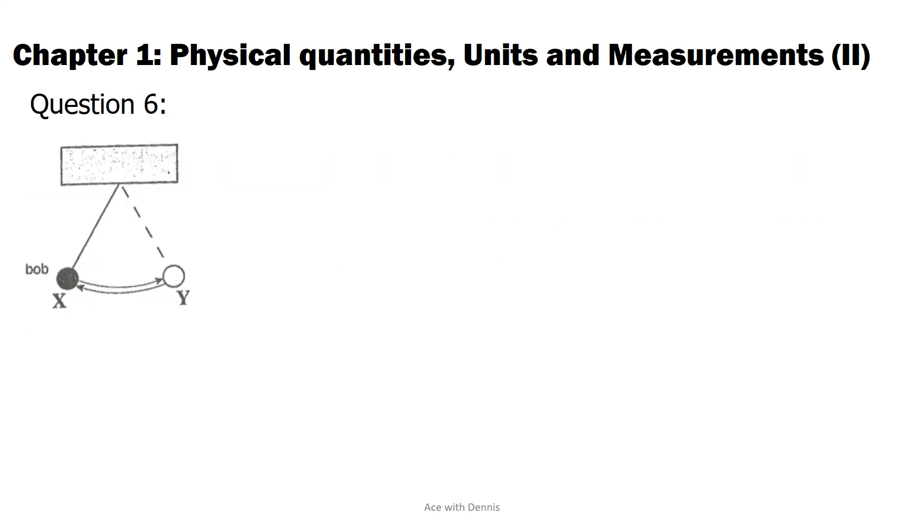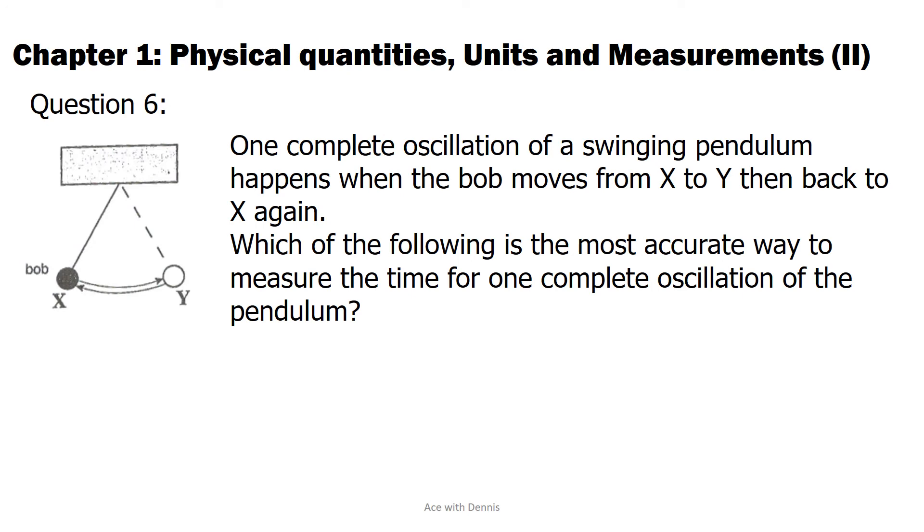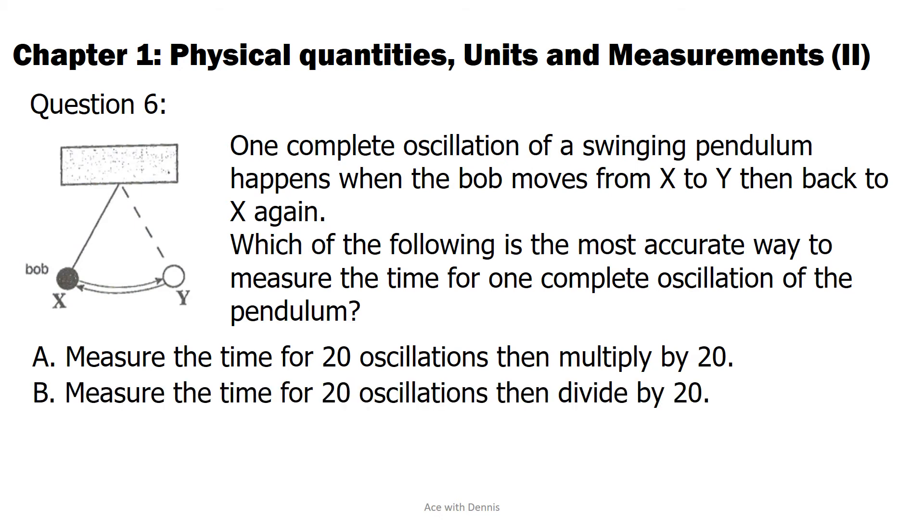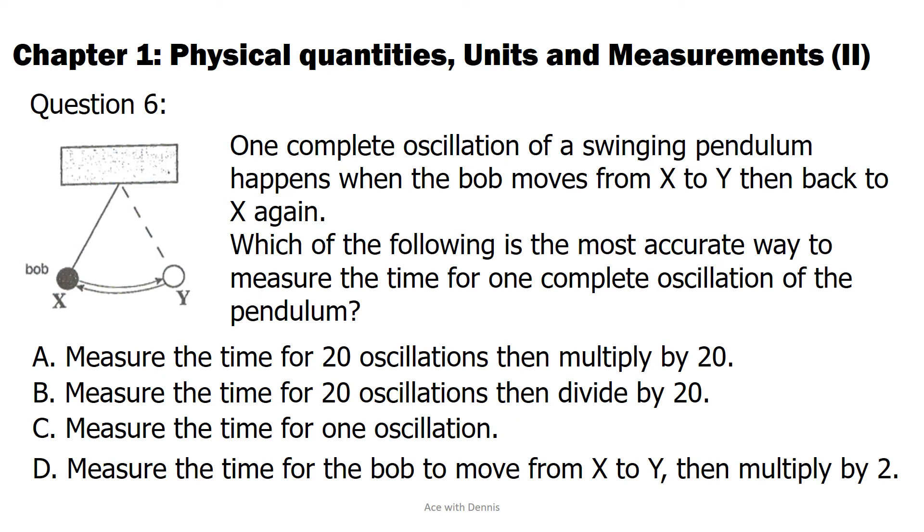Question 6. One complete oscillation of a swinging pendulum happens when the bob moves from x to y then back to x again. Which of the following is the most accurate way to measure the time for one complete oscillation of the pendulum? A. Measure the time for 20 oscillations then multiply by 20. B. Measure the time for 20 oscillations then divide by 20. C. Measure the time for one oscillation. D. Measure the time for the bob to move from x to y then multiply by 2.